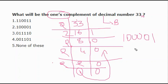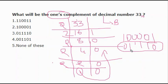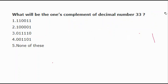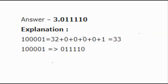Now you have converted decimal 33 into binary: 1000001. To find the one's complement, simply reverse every bit — flip 1 to 0 and 0 to 1. The one's complement is 0 1 1 1 1 1 0. Simple. The basic logic is: convert decimal to binary, then take the one's complement of each bit.